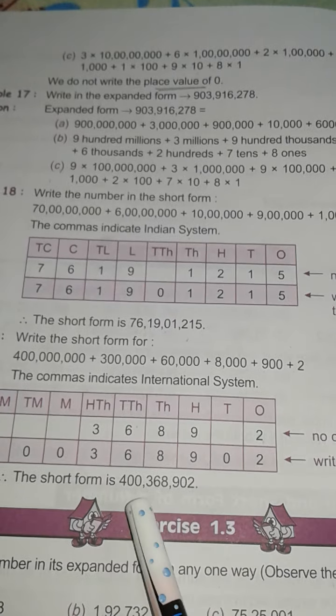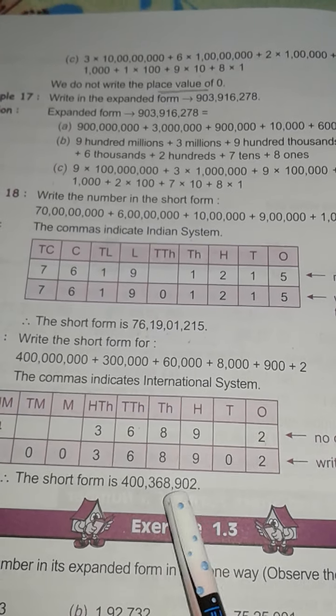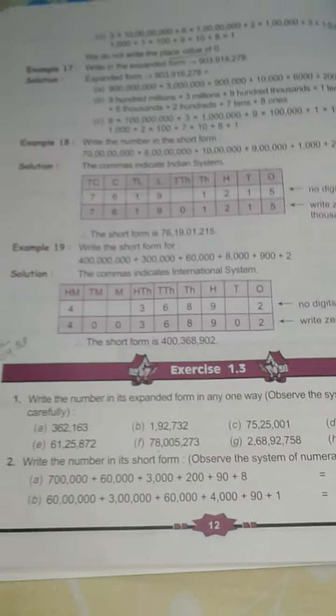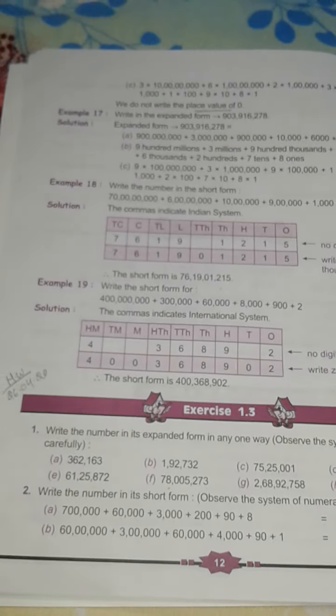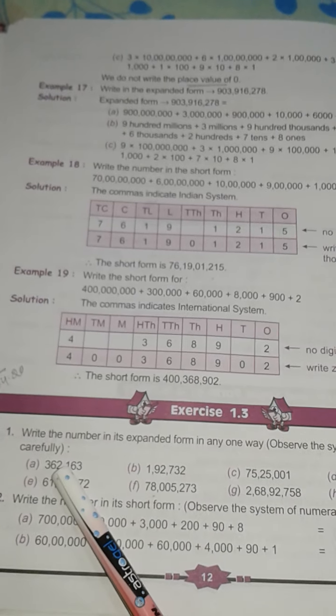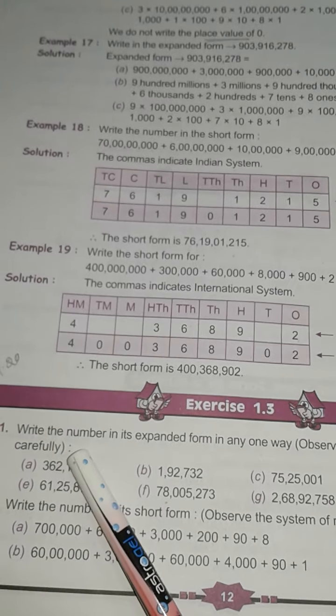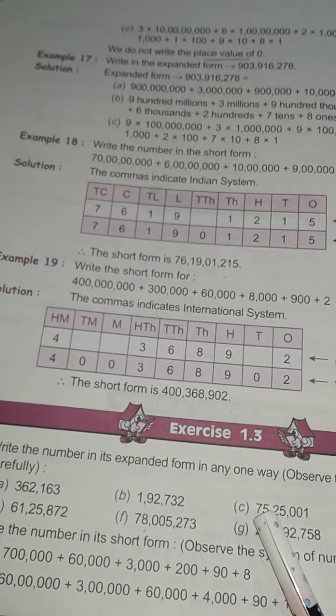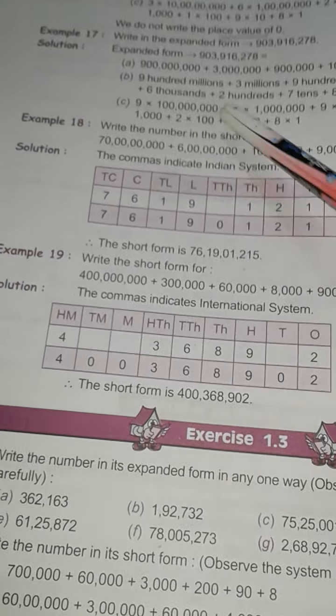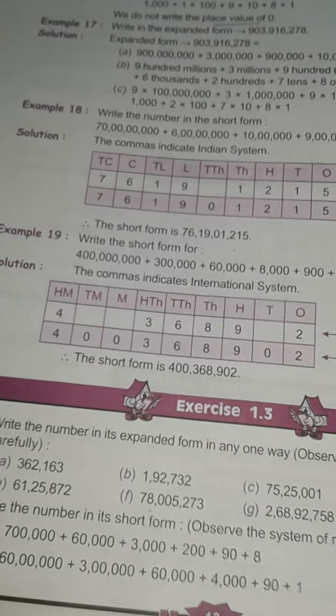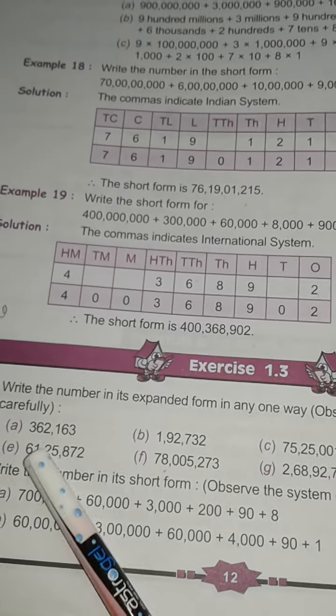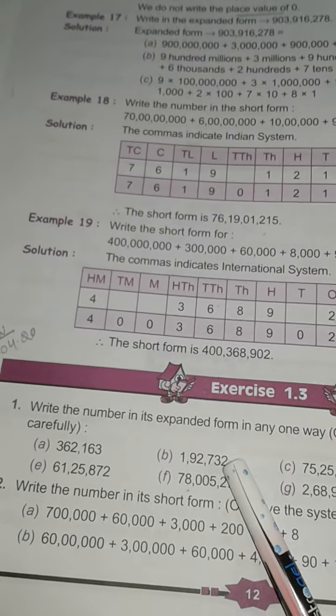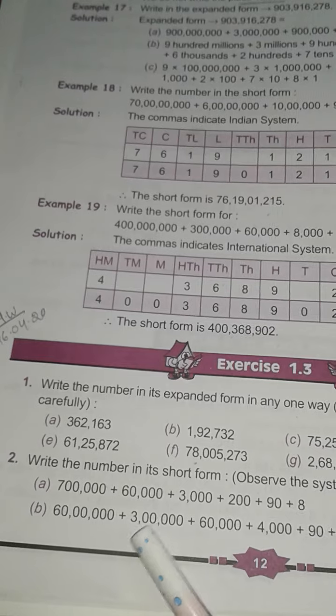Number one is: write the number in its expanded form in any way. Means you are given three ways, you have to write in any one way. So you follow these examples, then you do number two also.